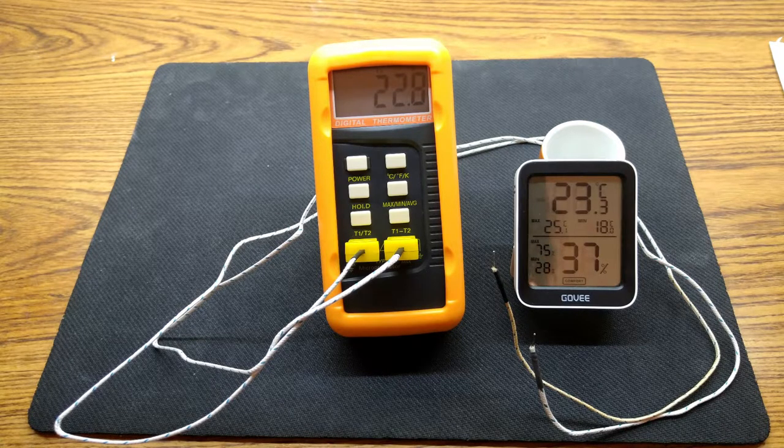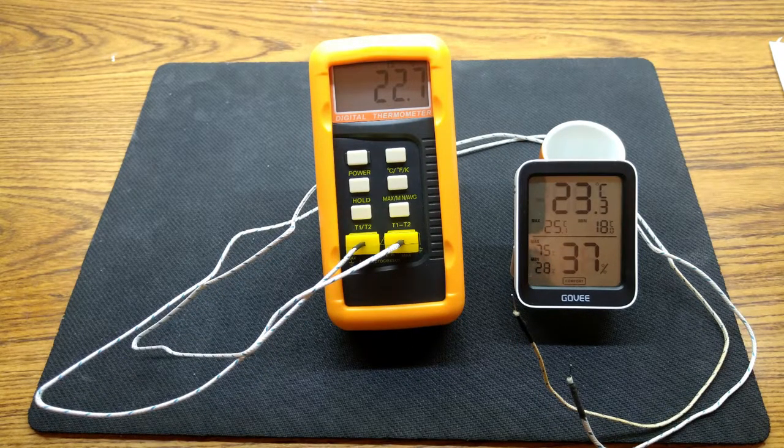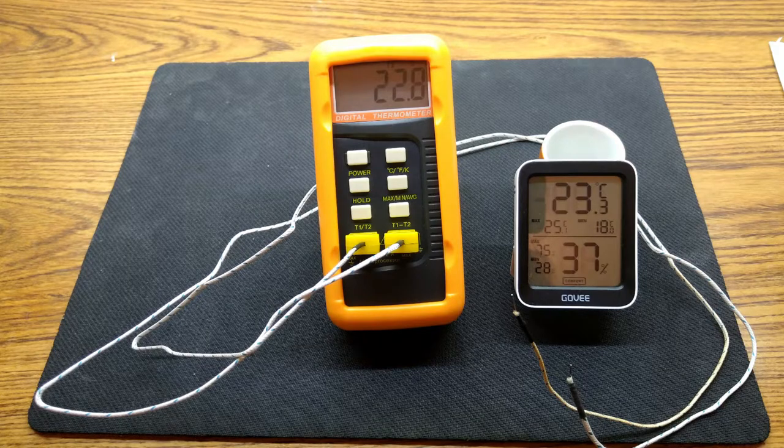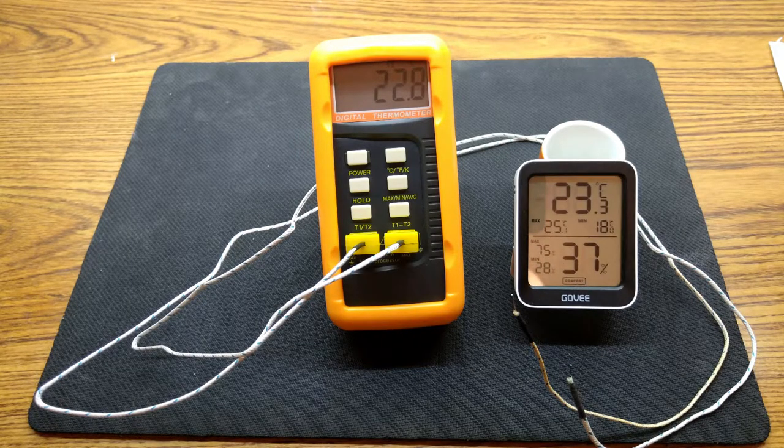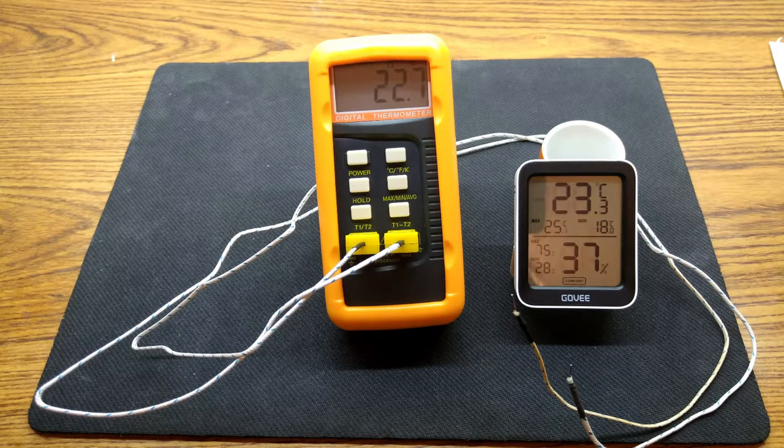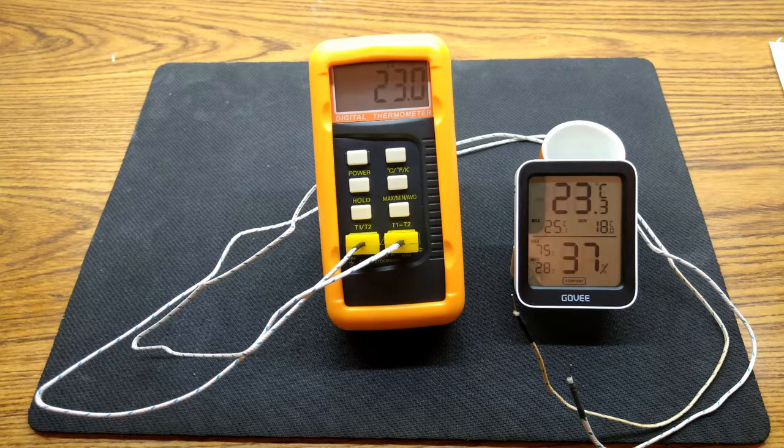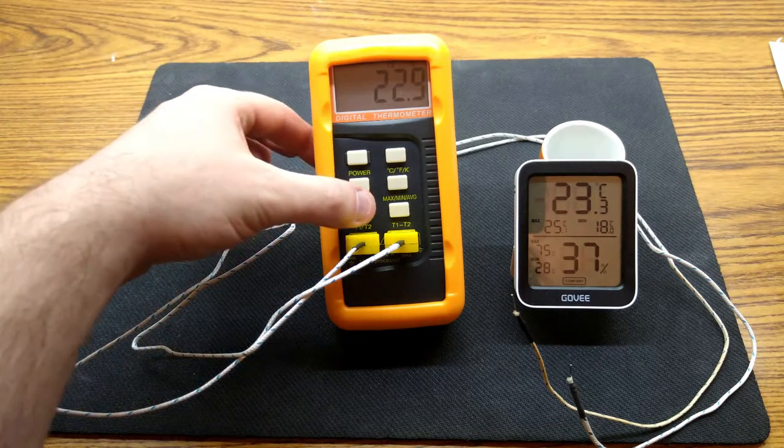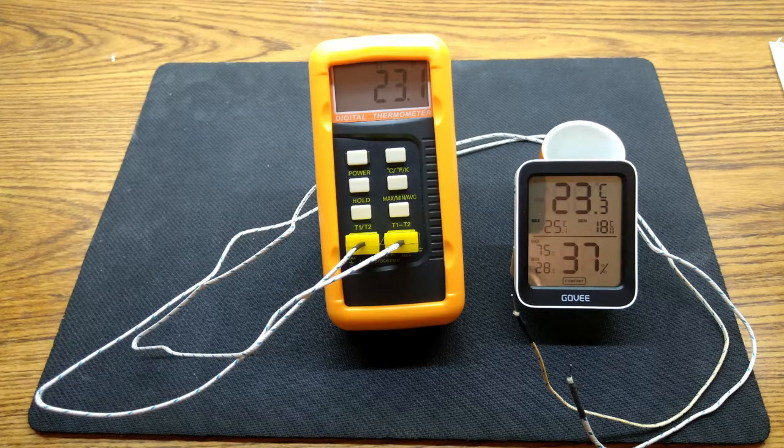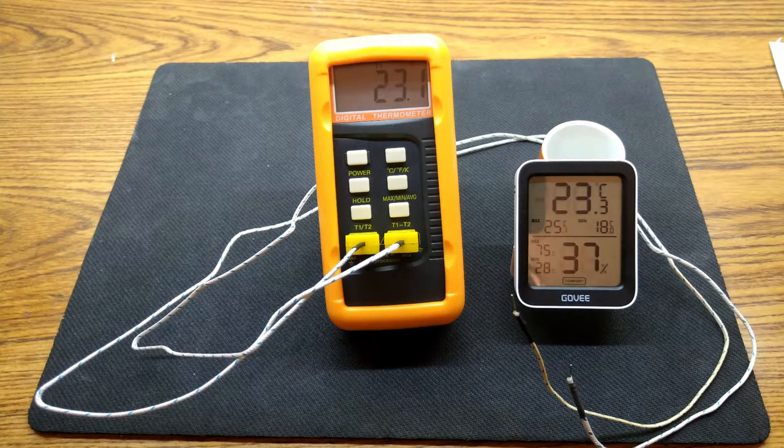Now it claims to have an accuracy of plus or minus 0.5 degrees Celsius, and for ambient temperature when compared against the Gove, this certainly appears to be the case. We can see that it's within 0.5 degrees Celsius of the ambient temperature.